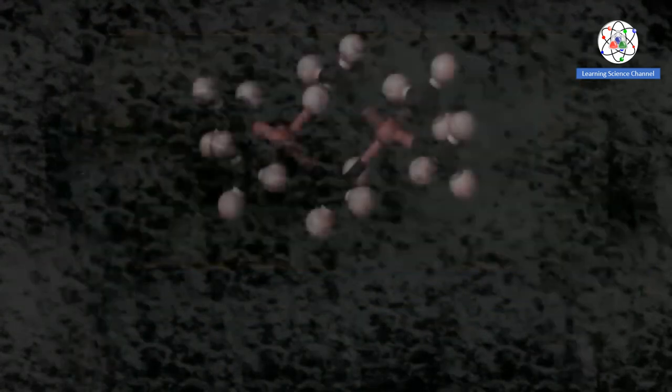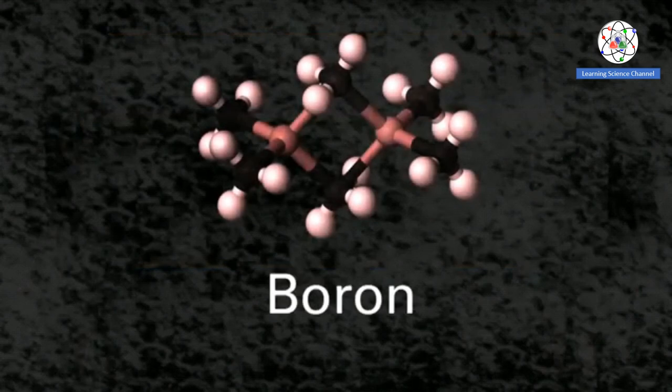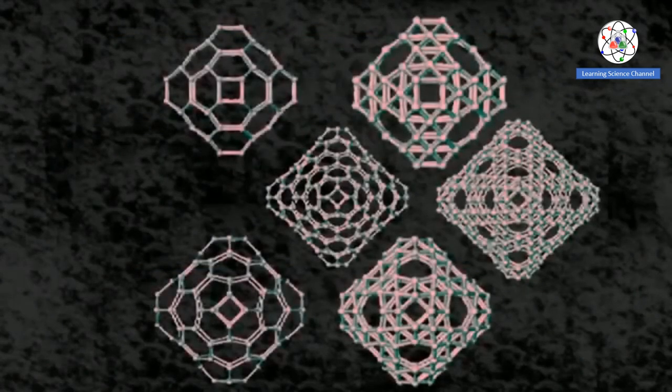Another metalloid, with many allotropes, is boron, each with its own unique structure.